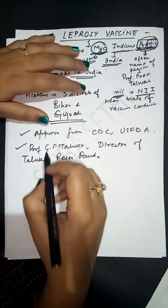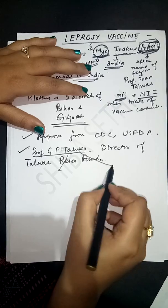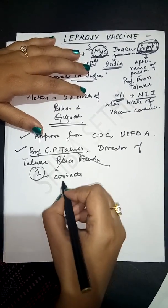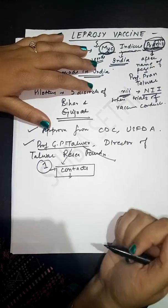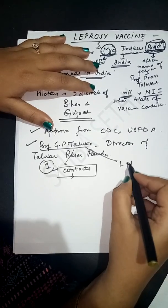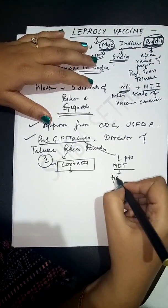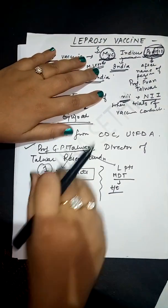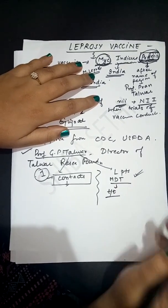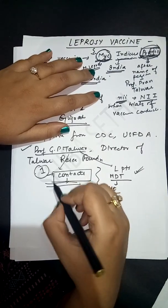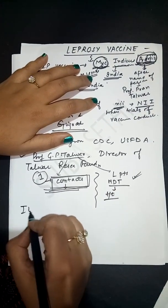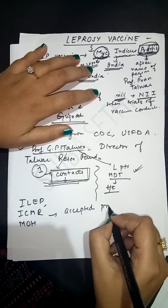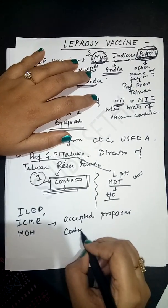The motive behind introducing this vaccine was twofold: one, to give it to contacts of leprosy patients so they don't develop leprosy in future; and two, for leprosy patients themselves along with MDT therapy in order to treat the patient. However, approval was not given to GP Talwar for using it to treat leprosy patients. Approval was given only to test it among contacts of leprosy patients. ILEP, ICMR, and the Ministry of Health accepted this proposal.